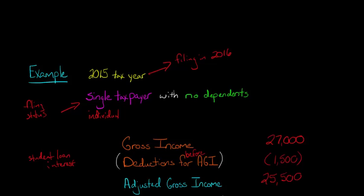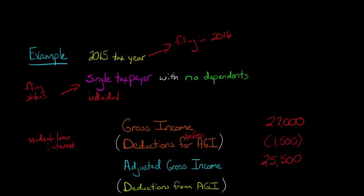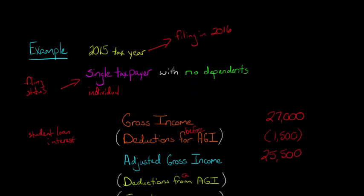That's our adjusted gross income. Sometimes when you put together your state income tax return, it might ask for your AGI from a specific line on your federal return. Now, we're going to get into the deductions from AGI, or deductions after AGI. We basically have to make a decision: do we want to itemize, or do we want to take the standard deduction?